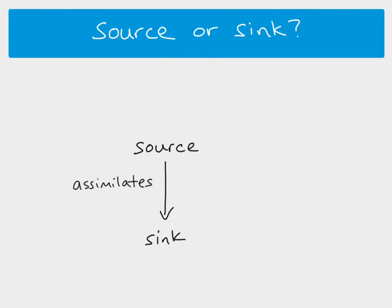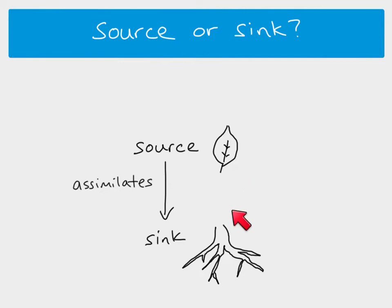The most common example is the leaf as the source, where photosynthesis produces glucose. That glucose is converted into sucrose. The sink is another part of the plant, for example the roots, which can't produce their own sucrose because they don't photosynthesise, so the sucrose must travel from the leaf down to the roots.